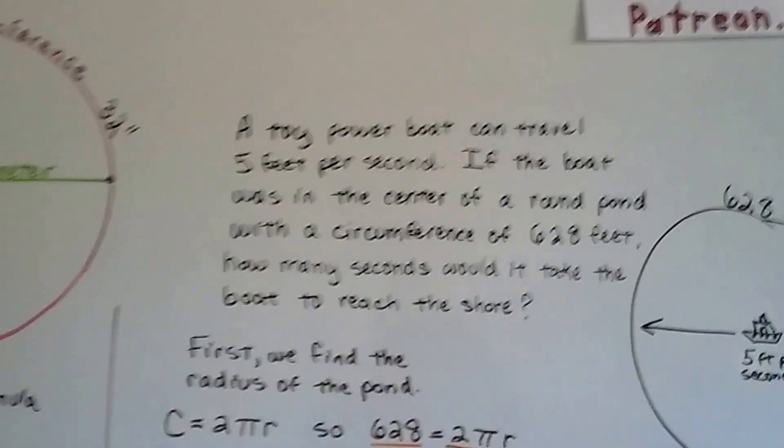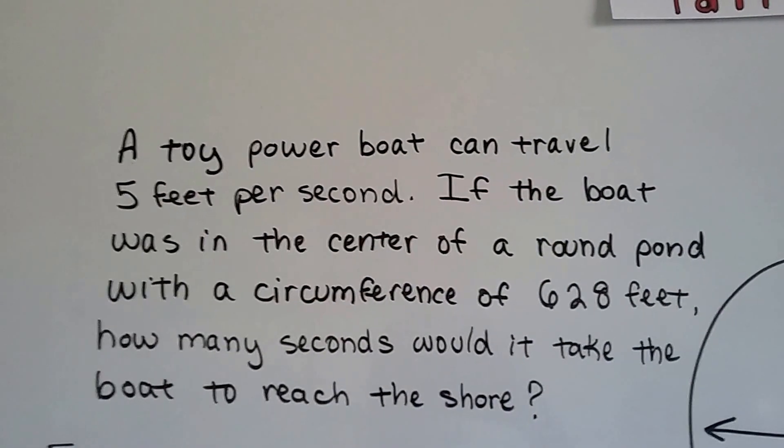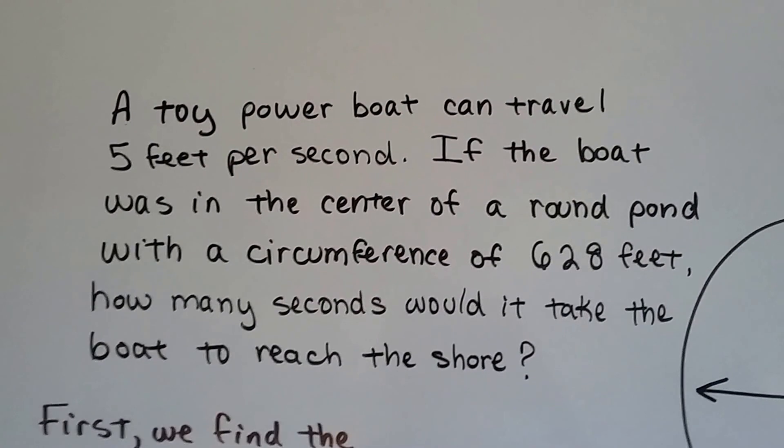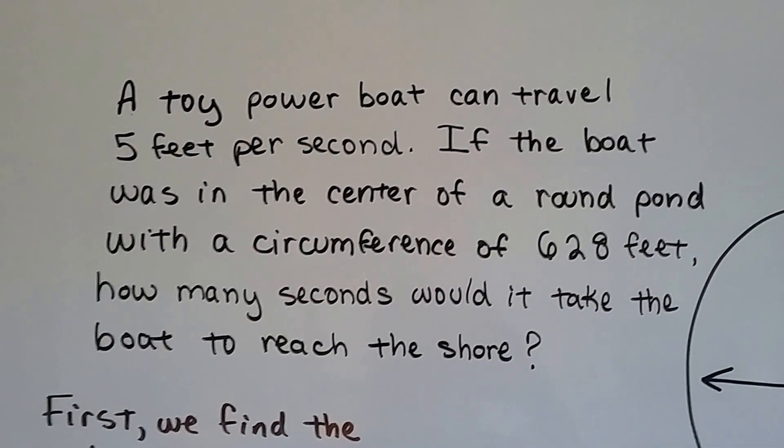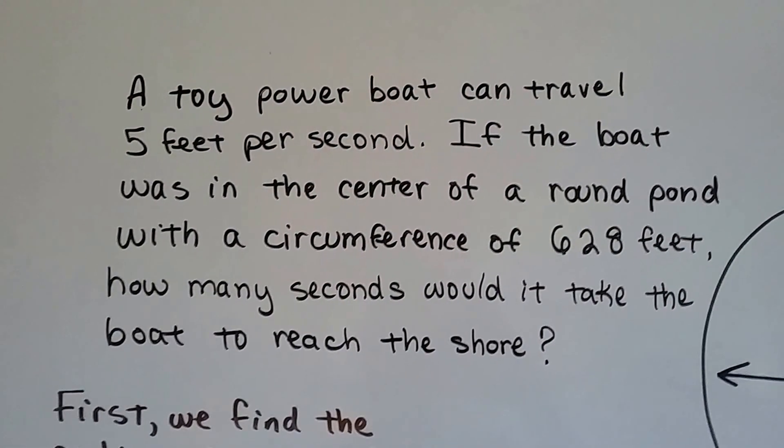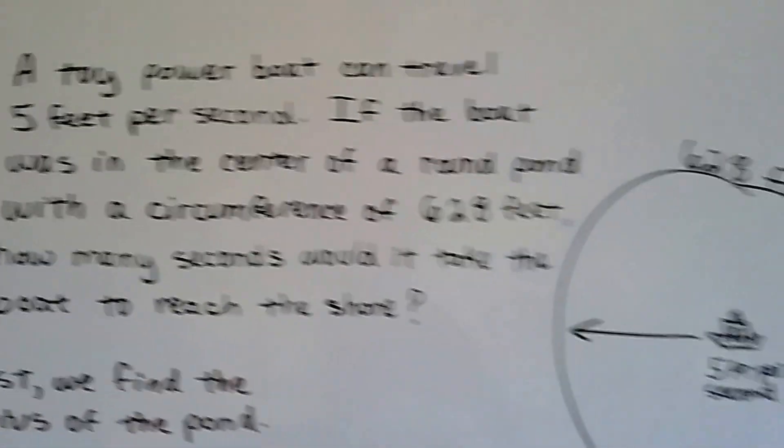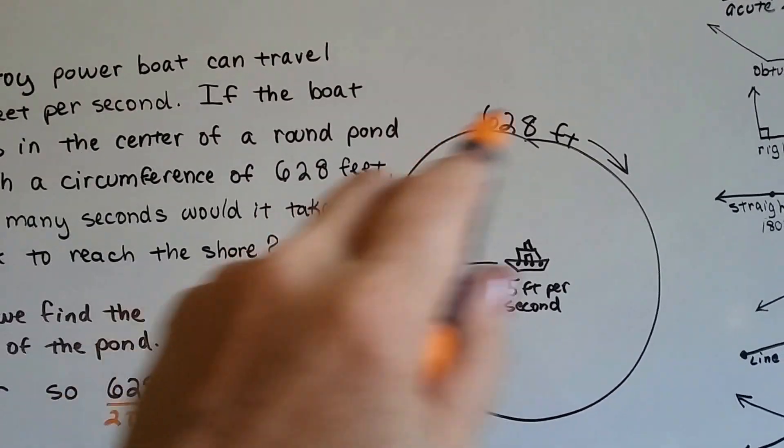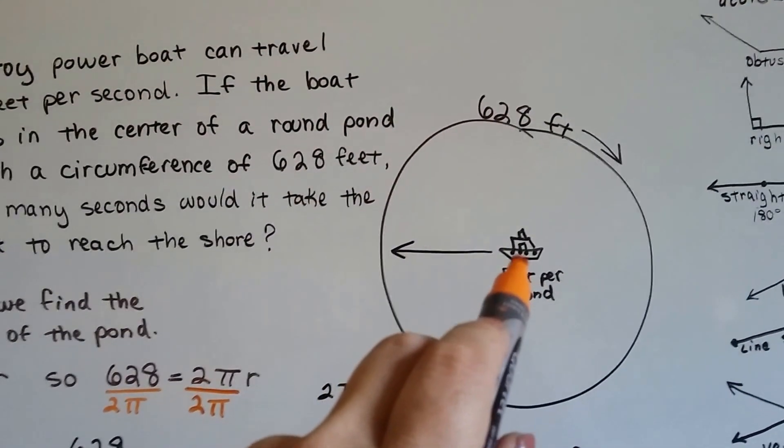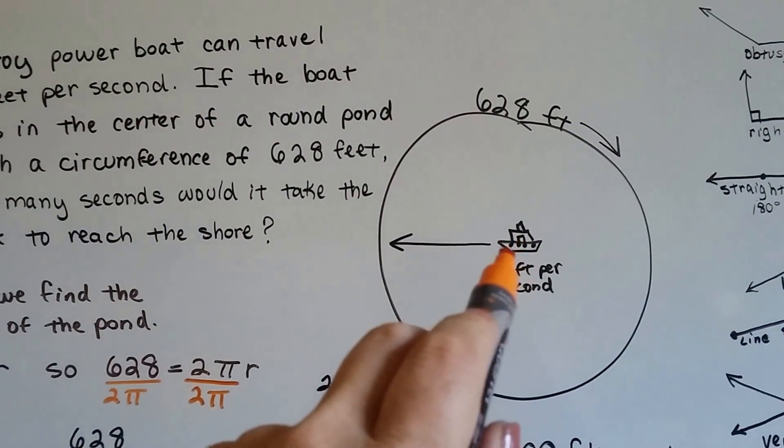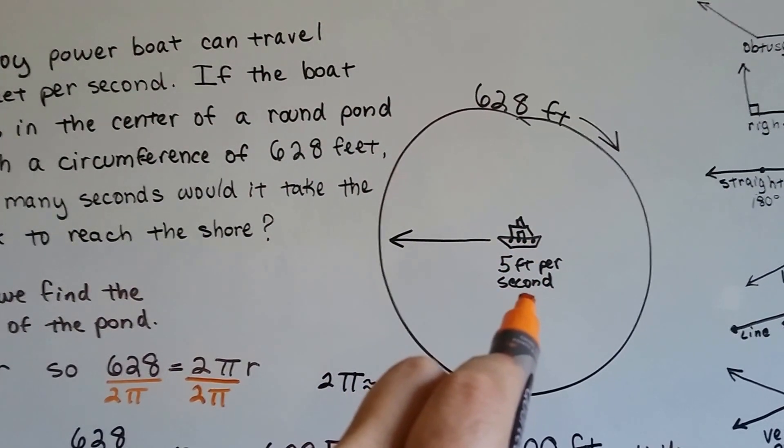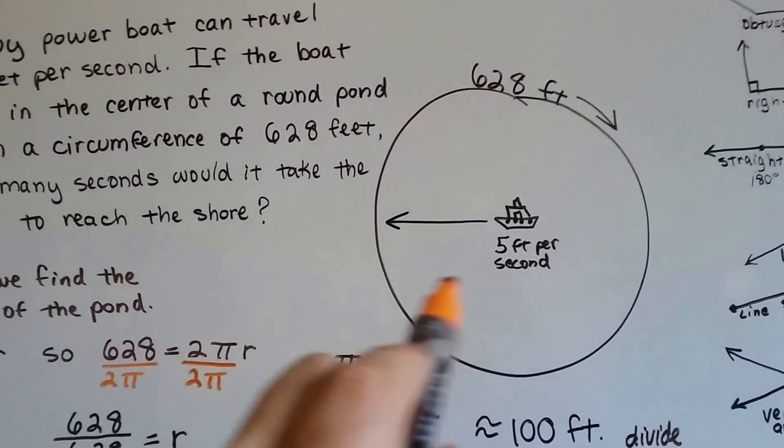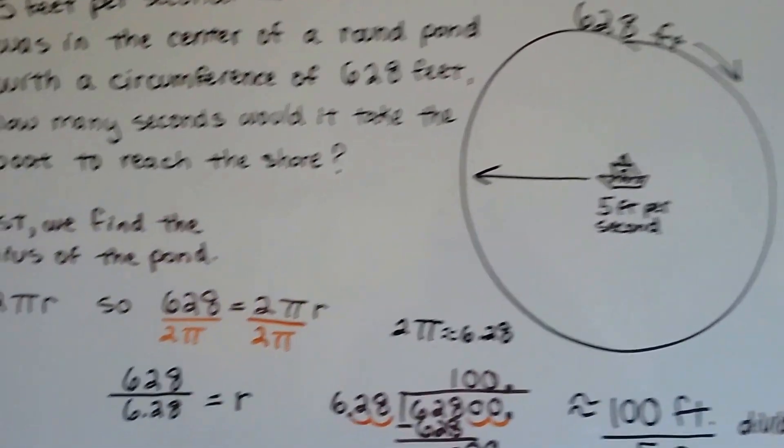A toy powerboat can travel five feet per second. If the boat was in the center of a round pond with a circumference of 628 feet, how many seconds would it take the boat to reach the shore? So here's our round pond, and it's got 628 foot circumference, and this little tiny toy boat is in the center. It's sitting right in the center, and it can go five feet per second once the motor starts. So it's going to run along the radius from the center to the edge.